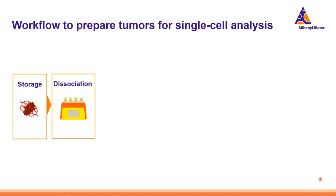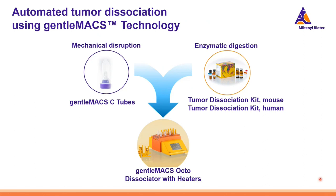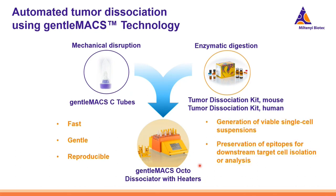Once we are ready to process the tumors, we need to extract the cells we need to analyze. The gentleMACS technology is the perfect fit, because it combines automated and gentle mechanical disruption of the tissue with also gentle enzymatic digestion. For tumors, we apply the tumor pieces in the gentleMACS C-tubes and use the Tumor Dissociation Kit mouse or human, depending on the type of tumor we want to digest, and apply the enzymes inside the tube. Everything then goes into the gentleMACS Octo Dissociator with Heaters, which provides full automation of the dissociation. This technology allows fast, gentle, and reproducible dissociation of tumor samples with the goal of generating viable single cell suspensions with preservation of epitopes necessary for downstream target cell isolation or analysis.